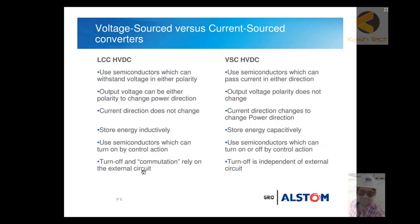Further comparisons: LCC converters use semiconductors which can withstand voltage in either polarity, whereas VSC HVDC uses semiconductors which can pass current in either direction. For VSC HVDC, to change power direction you change the current direction, not the voltage polarity. For LCC HVDC, the output voltage polarity changes to reverse power, whereas in VSC HVDC the output voltage polarity does not change. In LCC HVDC, current direction does not change, whereas in VSC HVDC the current direction changes to change power direction.